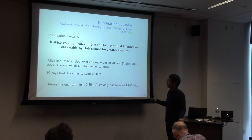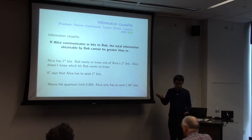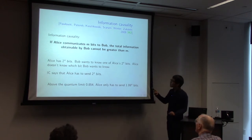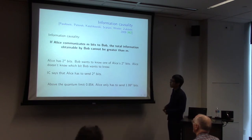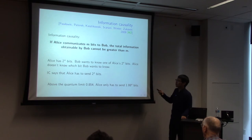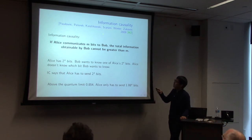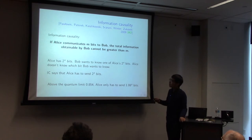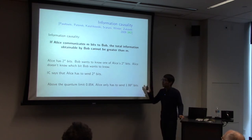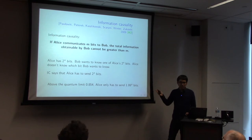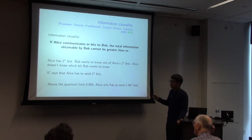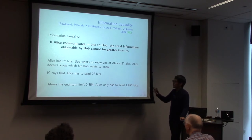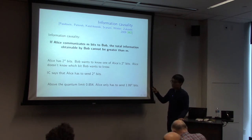Let's move to the next topic: information causality. This is very interesting. Information causality intuitively means that if Alice communicates m bits to Bob, then the total information obtainable by Bob cannot be greater than m. This is written in the abstract of a paper published in Nature.